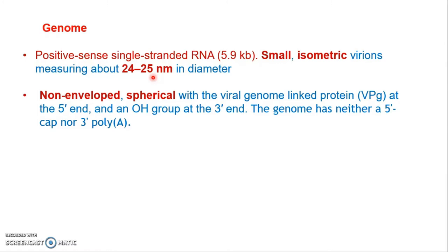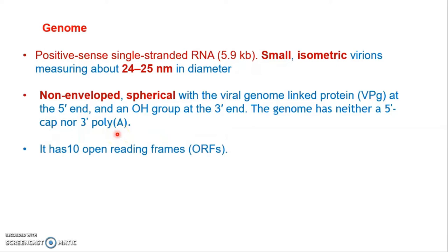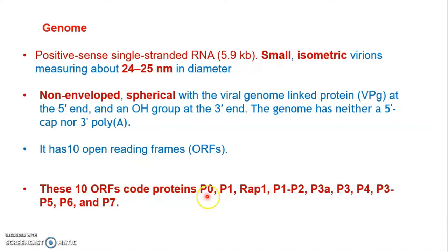The virus is non-enveloped — not covered by lipids or any fatty acid. At its 5' end, a small protein called VPg is linked, and at the 3' end an OH group is linked. The genome has neither a 5' cap nor a 3' poly-A tail. The genome of Potato Leaf Roll Virus has 10 open reading frames (ORFs), coding for proteins including P0, P1, replicase-associated protein, P1-P2, P3a, P3, P4, and others.